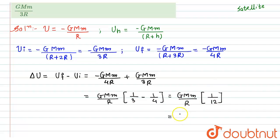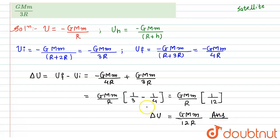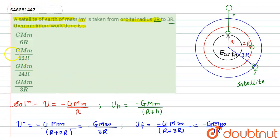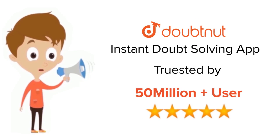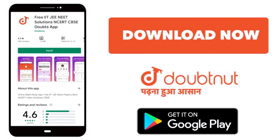So the final answer — the minimum work done — is GMm/12R. Option B is the correct answer. This is the required solution. Thank you. For class 6th to 12th, IIT JEE, and NEET level, trusted by more than 5 crore students — download the DoubtNut app today.